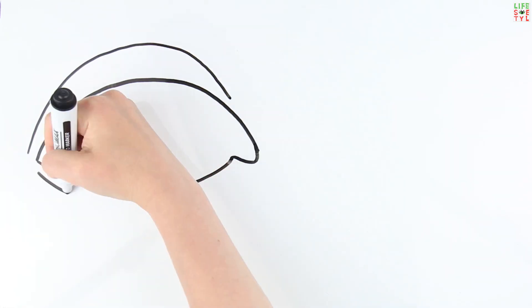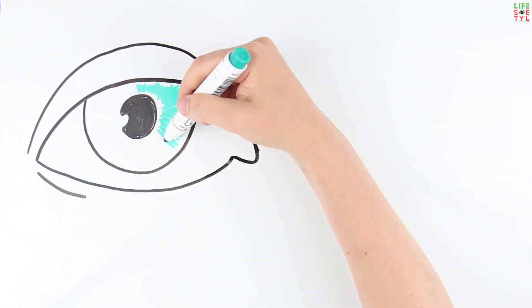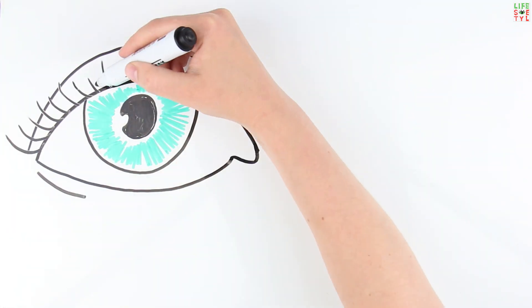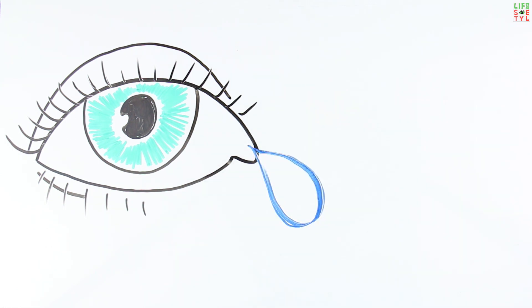Task number two: protection. Tears wash eyelashes, dust, small particles, corrosive substances, and smoke out of the eyes.